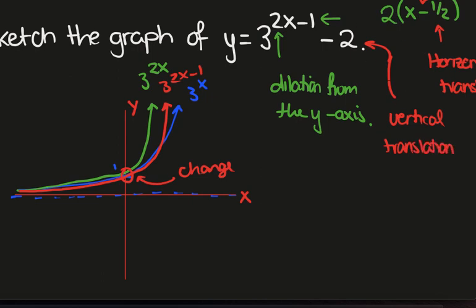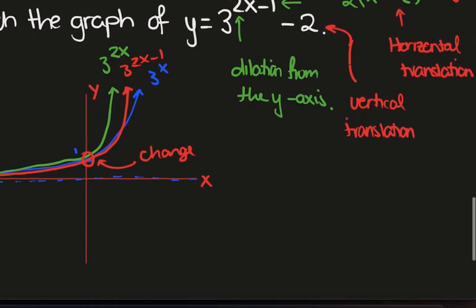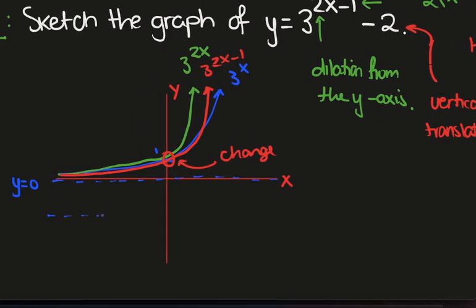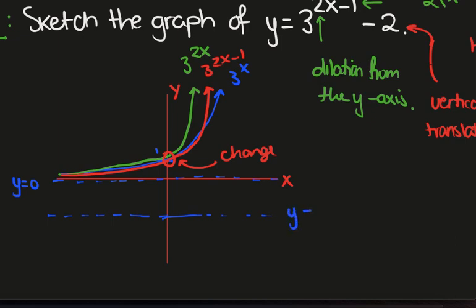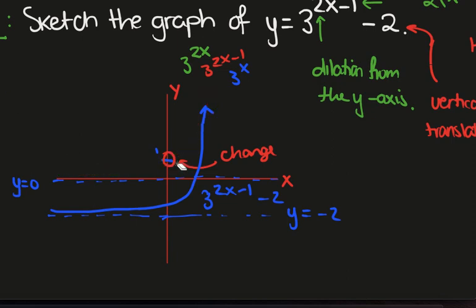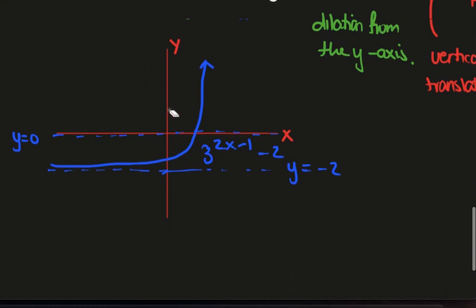I'll also do a tutorial on understanding all of these graphical transformations in detail. And so the final curve that we'll get will be that we move this down by 2. So this is y equals minus 2. And then it'll be something of this form. So this is our 3 to the 2x minus 1, minus 2. And let's just erase these graphs for the moment.